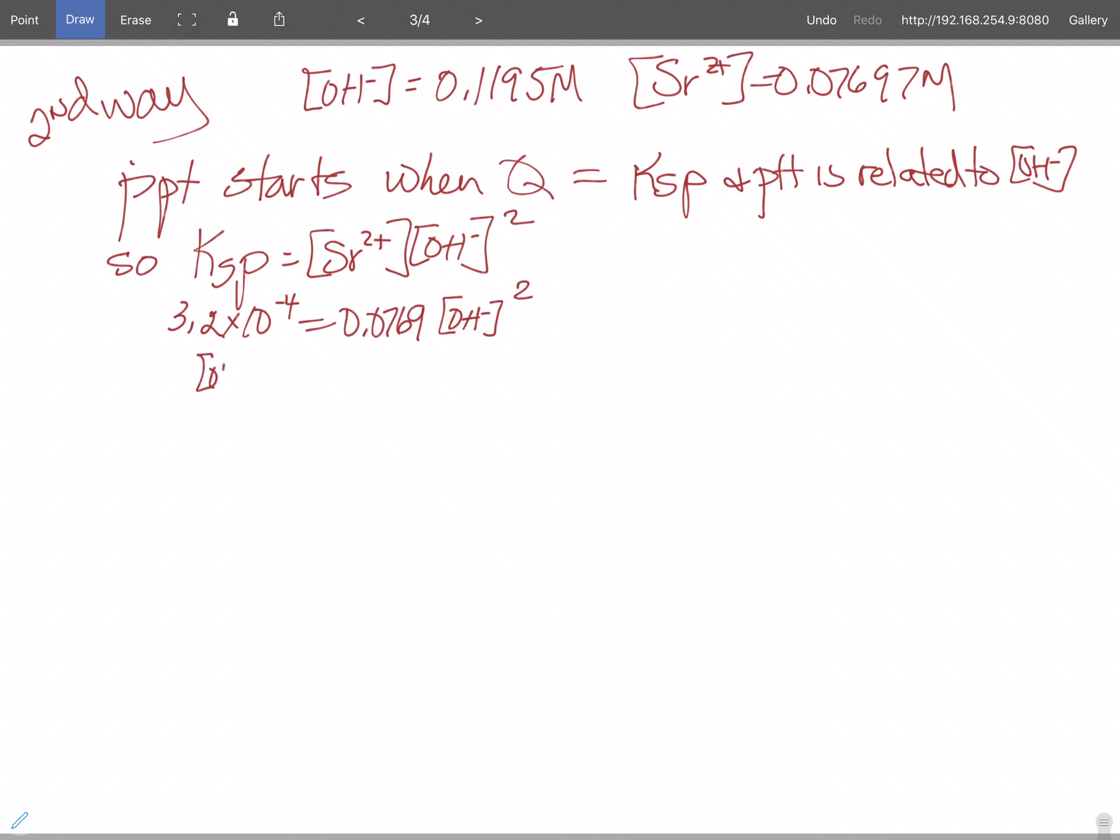So our hydroxide ion concentration squared is going to be equal to 0.00415746. Take the square root of both sides.